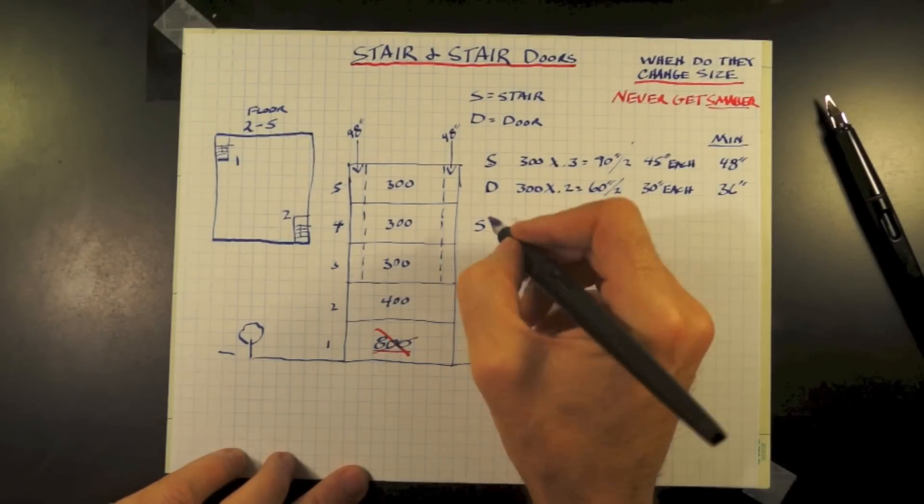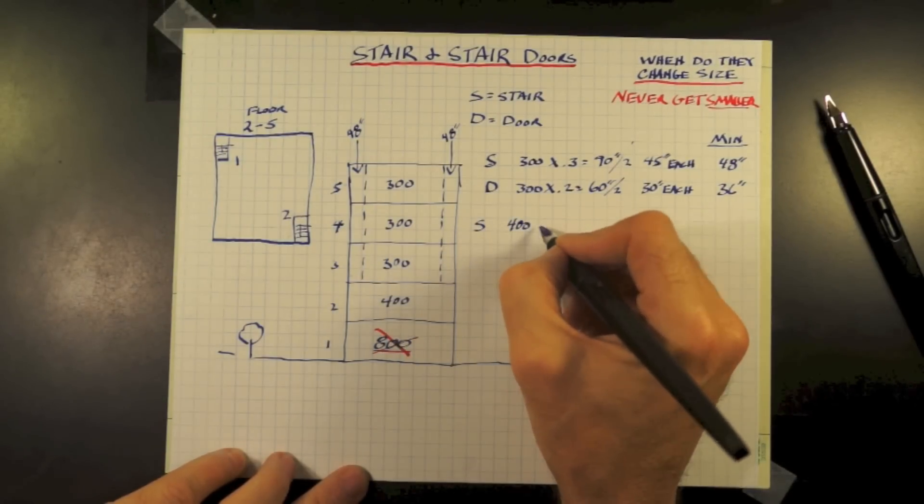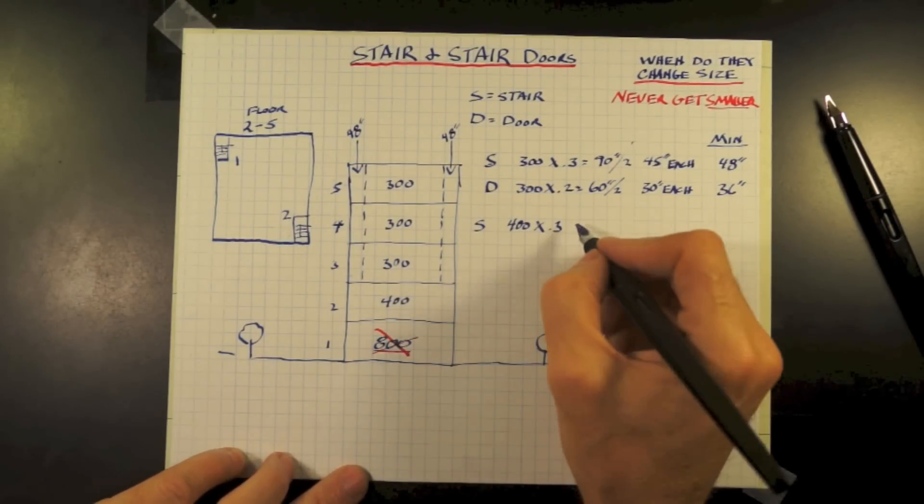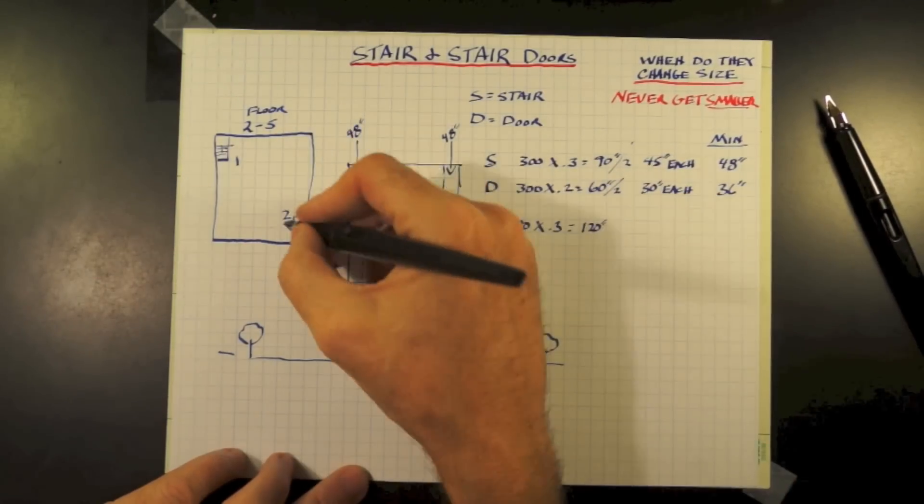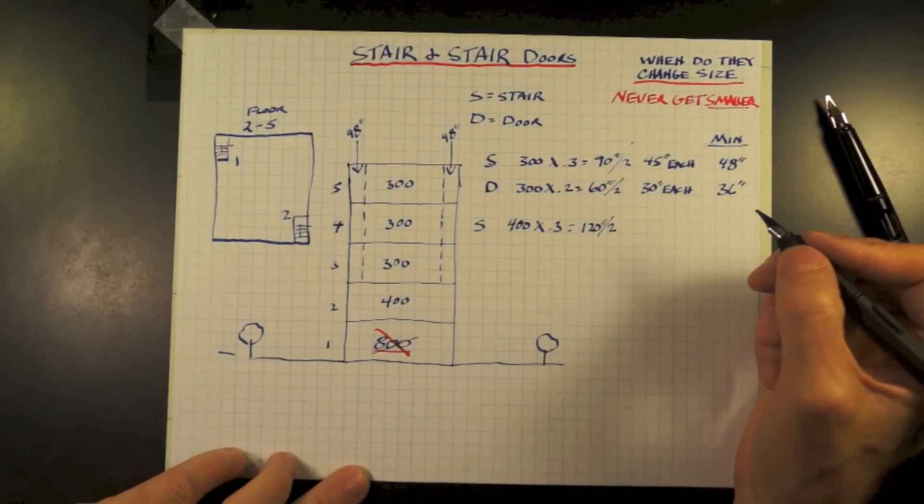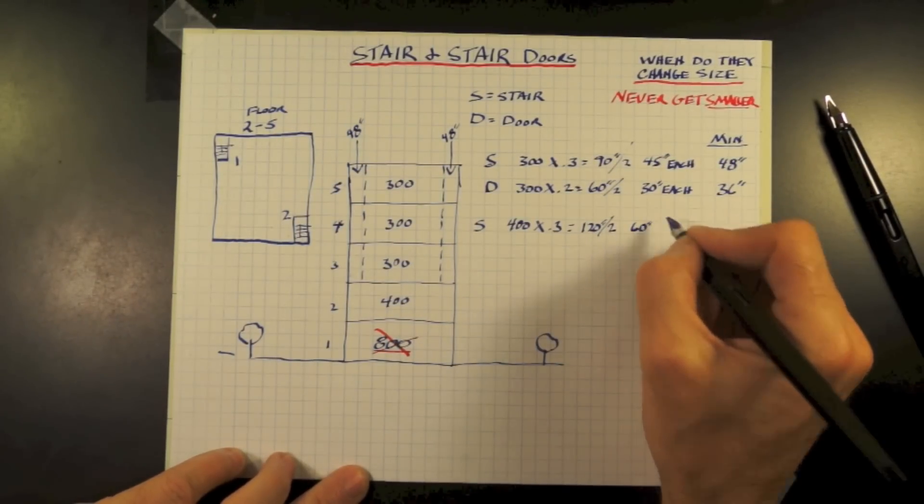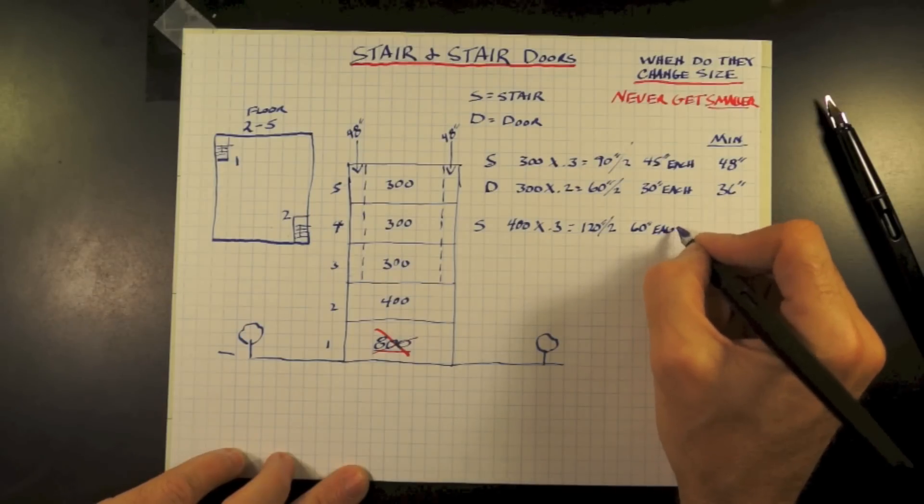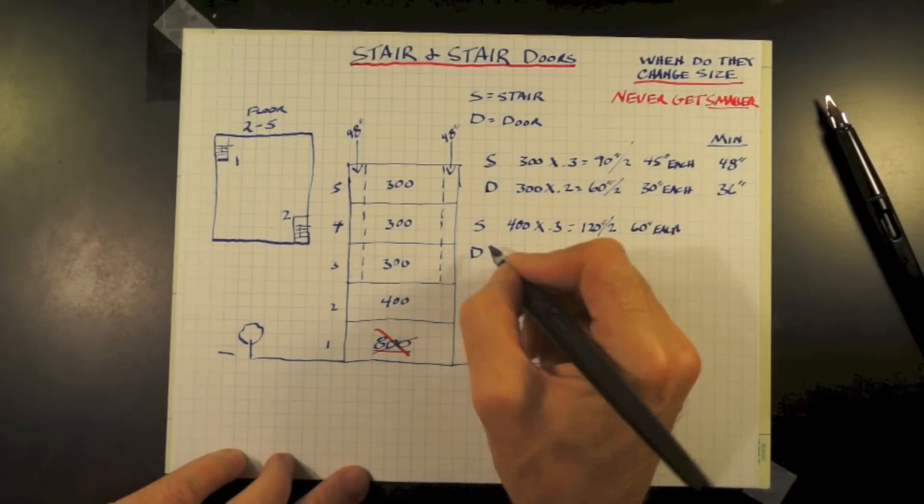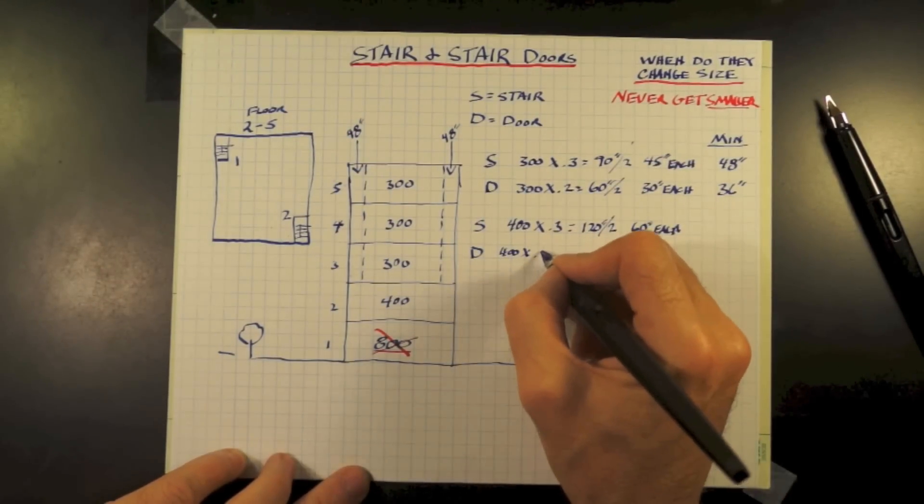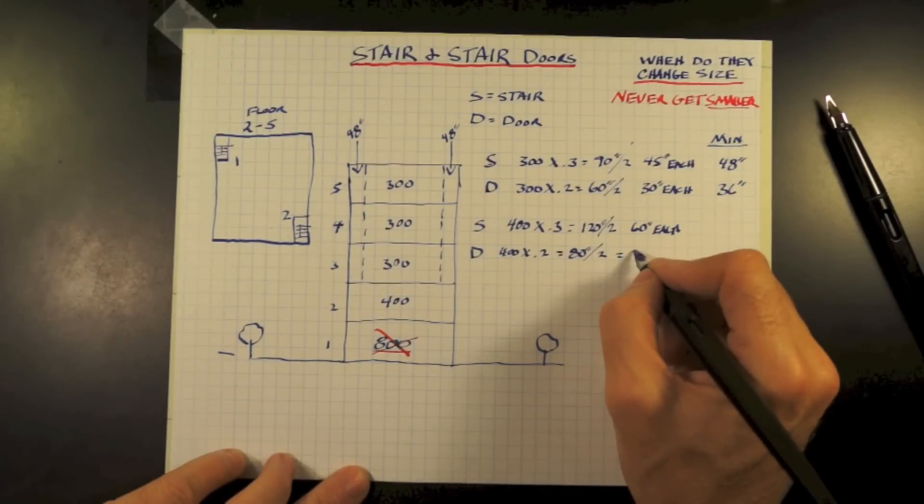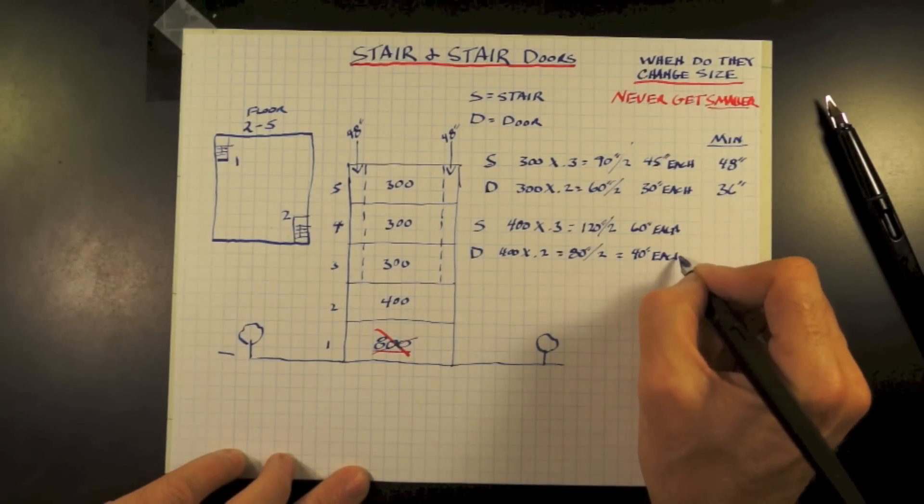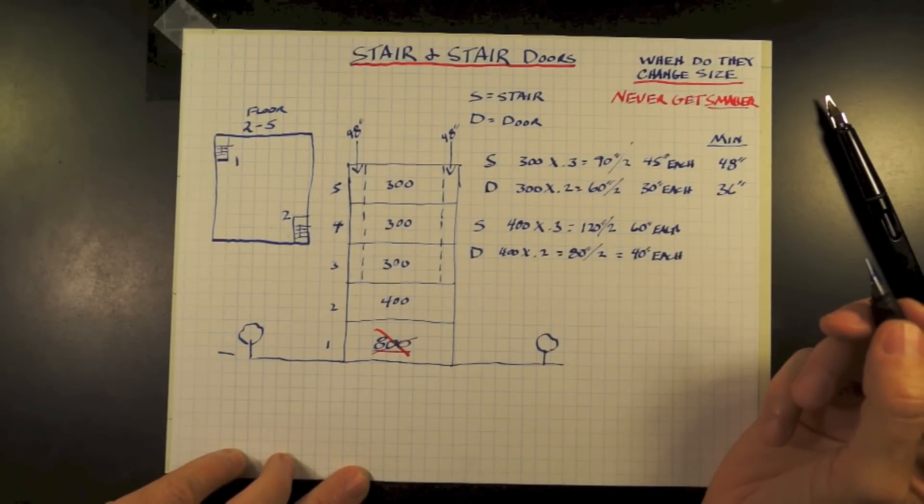Working our way down to the second floor with an occupant load of 400. 400 times 0.3 equals 120 inches divided by two. That means each stair shall be a minimum of 60 inches in width each. Our stair door: 400 times 0.2 equals 80 inches divided by two. That means each stair door shall be a minimum of 40 inches each, greater than the 36 inches minimum required.